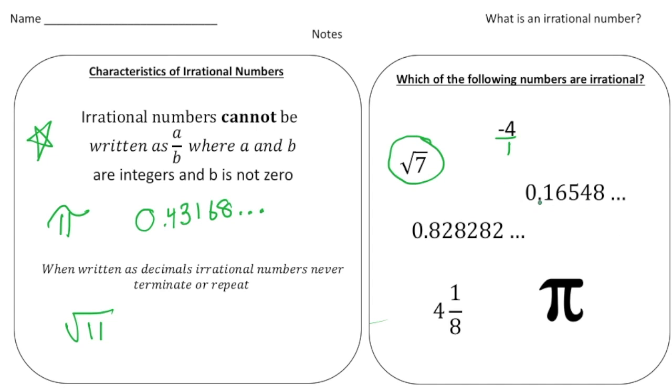Here we have the decimal 0.16548 dot dot dot. That means it goes on forever and there's no pattern, it's not repeating. So this certainly is irrational.